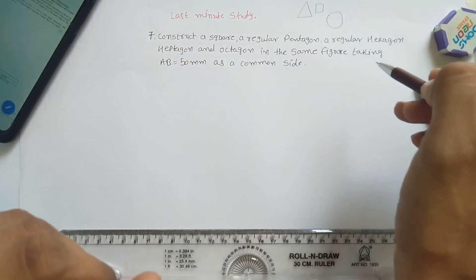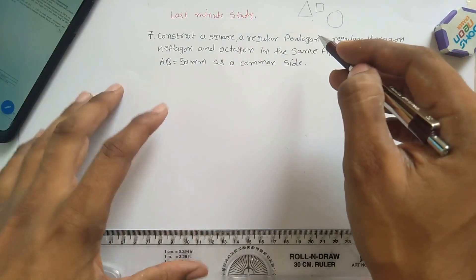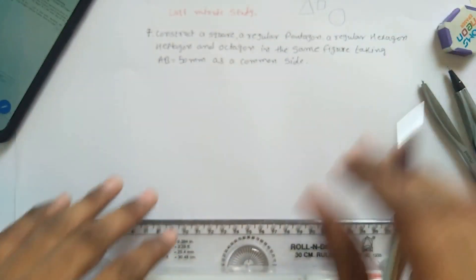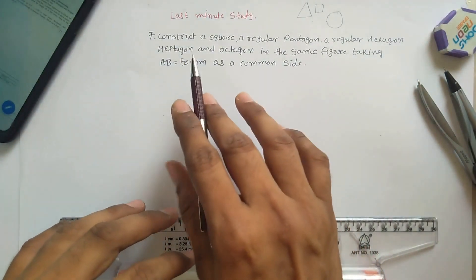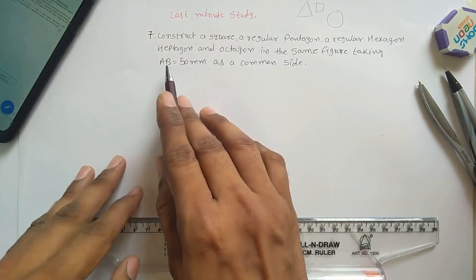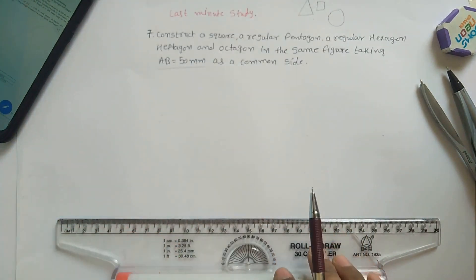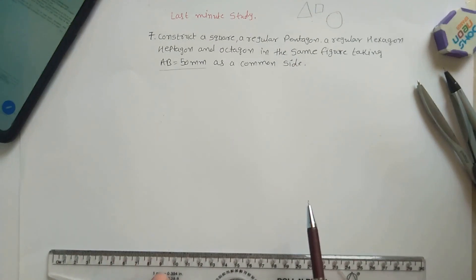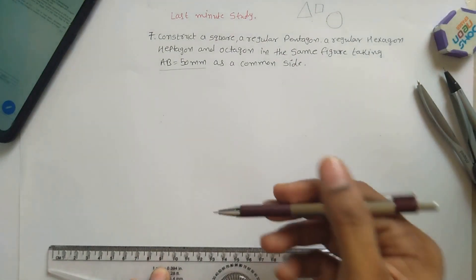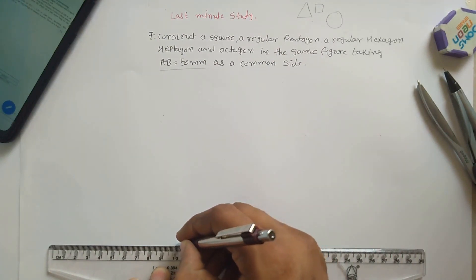The main definition of polygon to remember: greater than or equal to three equal sides and must be closed. You have to construct these polygons in one figure. Since every polygon has equal sides, the dimension of one side is given as 50 mm. First of all, construct a 50 mm line.